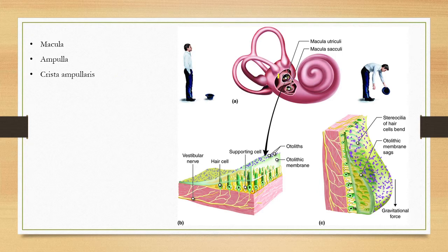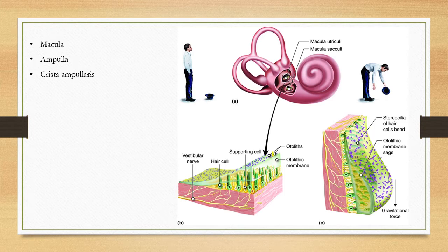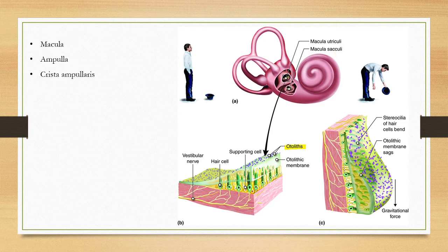Inside the utricle and saccule there is a specialized balancing organ called the macula utriculae, and in the saccule it is called the macula saccule. These contain sensory hair cells covered by a jelly-like membrane in which minute balancing structures called otoliths — made of calcium carbonate — are present. Whenever there is imbalance, there is a shifting movement of the jelly-like membrane that causes stimulation of the hair cells.